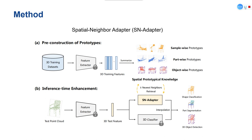Specifically, we theoretically split a trained network into two parts. The first is the feature extractor that encodes an input raw point cloud into high-dimensional representations. The second is the 3D classifier, which is usually the last linear layer of the network and categorizes the encoded vectors with classification logits.